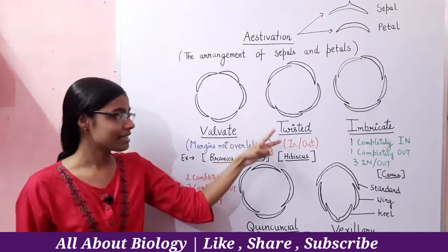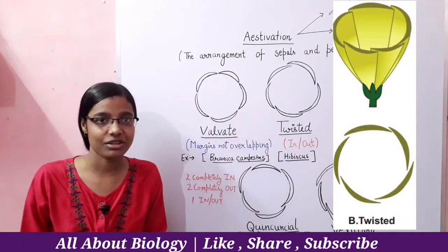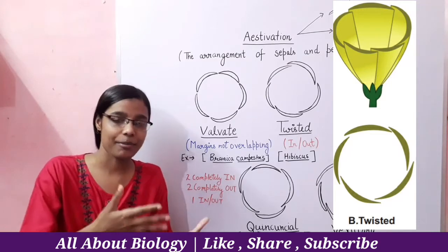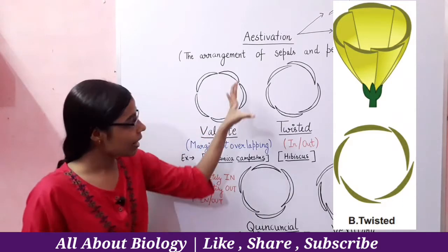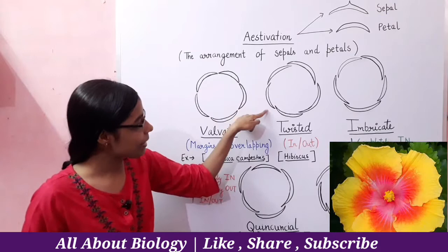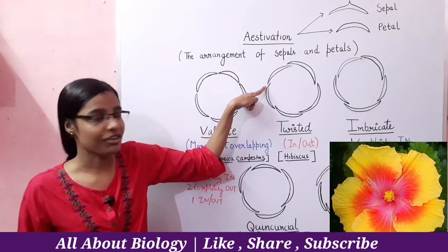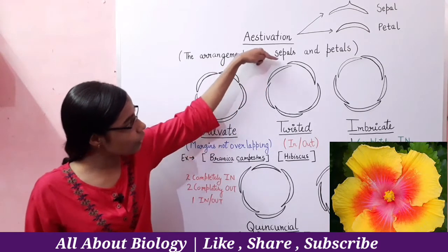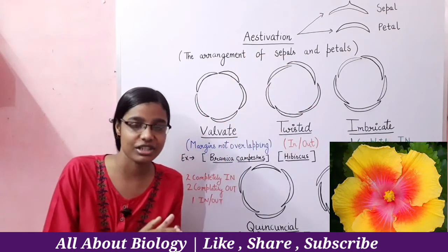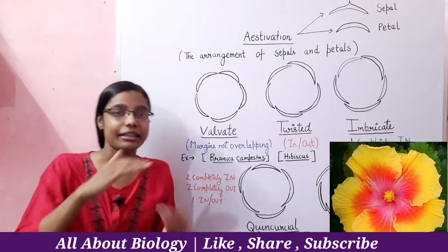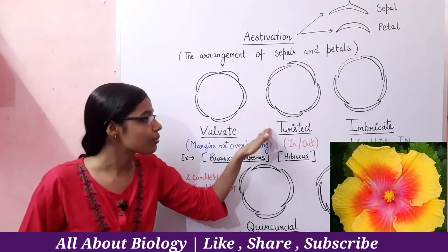Now let's move to our second type, Twisted Estivation. In Twisted Estivation, one margin of the petal or sepal will overlap with the other margin. This petal has one end from the outside and the other margin from the inside. Similarly, for each petal, one margin is inside and the other is outside — simply an in-and-out situation in Twisted Estivation.